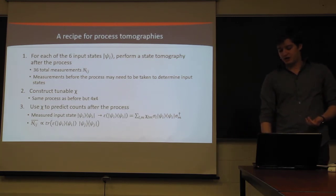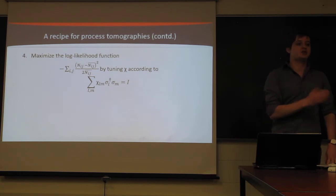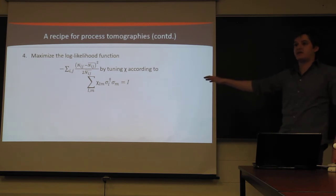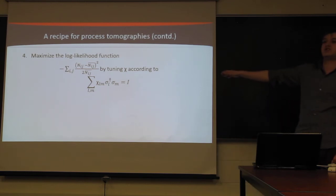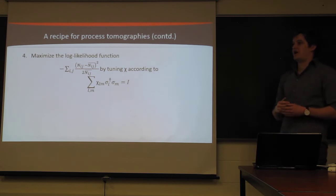And then, much again like the state tomography, we can just use these dummy count numbers to compare to the count numbers we actually have in a maximum likelihood set. We have the exact same likelihood function, except this time we have 36 different terms instead of six different terms. And we have this normalization condition. This normalization condition is exactly just the trace-preserving condition we discussed previously. And this just makes sure that the actual process that gets outputted is a genuine quantum process.